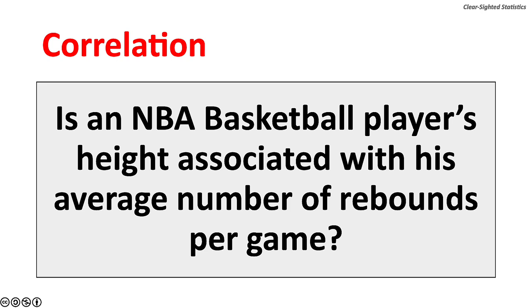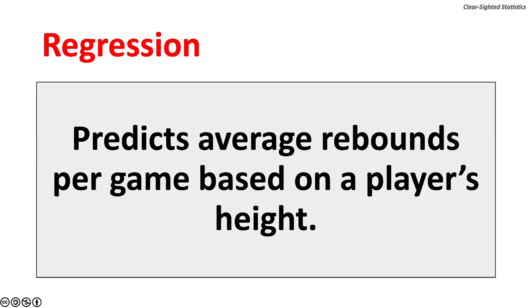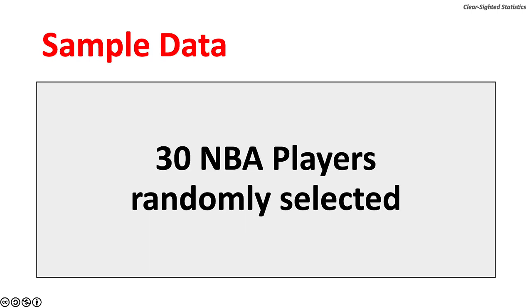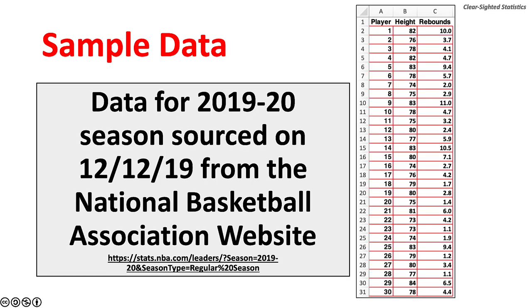Correlation example: is an NBA basketball player's height associated with his number of rebounds per game? A rebound is credited to a player who retrieves the ball after a missed field goal or foul shot. Rebounds are important because a team that scores a rebound keeps possession of the ball. Linear regression would predict average rebounds per game based on a player's height. A sample of 30 NBA players was randomly selected from current team rosters for the 2019-20 season, sourced on December 12, 2019 from the NBA's website.